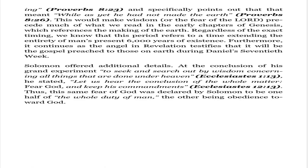Regardless of the exact timing, we know that this period refers to a time extending the entirety of man's present 6,000 years of existence. Furthermore, it continues as the angel in Revelation testifies that it will be the gospel preached to those on earth during Daniel's 70th week. Solomon offered additional details. At the conclusion of his grand experiment to seek and search out by wisdom concerning all things that are done under heaven (Ecclesiastes 1:13), he stated: 'Let us hear the conclusion of the whole matter: fear God, and keep his commandments' (Ecclesiastes 12:13).